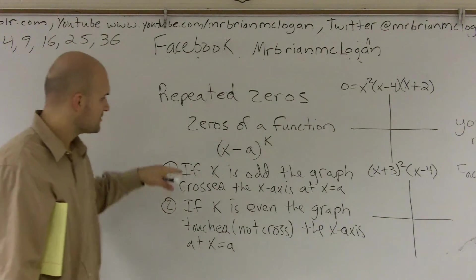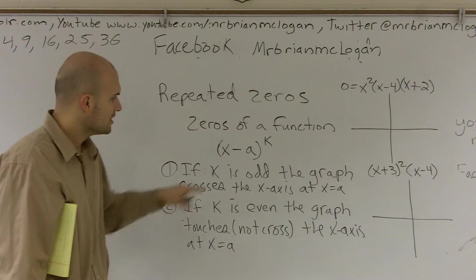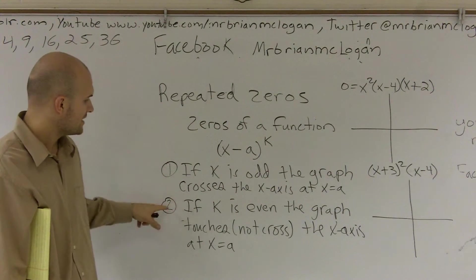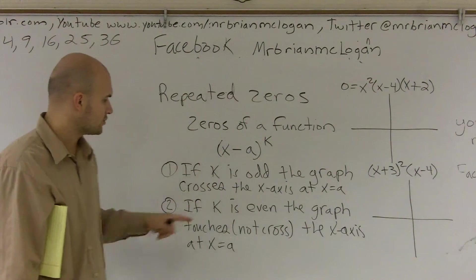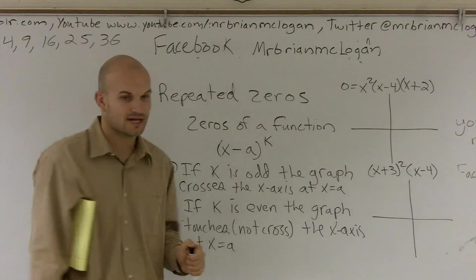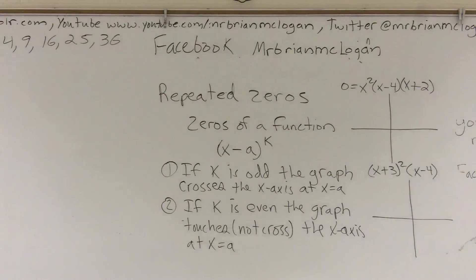Depending on what your exponent is, if k is odd, the graph crosses the x-axis at x equals a. And two, if k is even, the graph touches but does not cross the x-axis at x equals a.